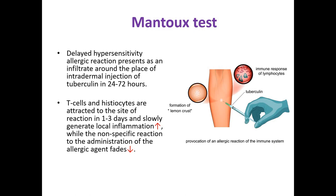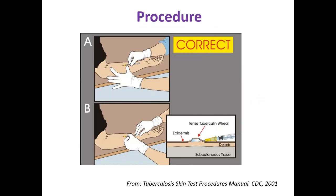Delayed hypersensitivity allergic reaction presents as an infiltrate around the place of intradermal injection of tuberculin within 24–72 hours. T cells and histiocytes are attracted to the site of reaction in the timeframe of 1–3 days and slowly generate local inflammation, while the non-specific reaction to the allergic agent fades. The procedure of intradermal tuberculin injection should be extremely accurate; otherwise, the substance may enter deeper in the skin or leak out, and the result may fail.